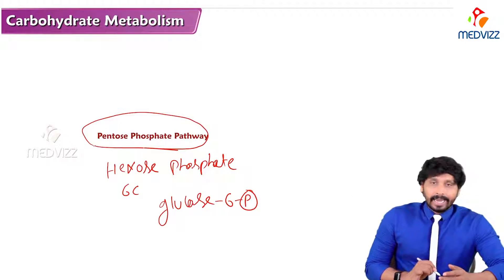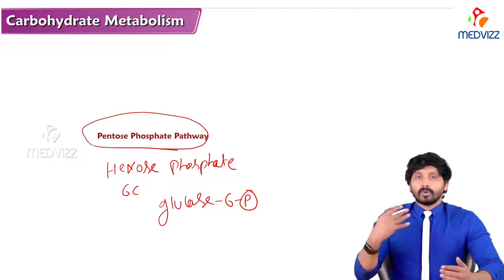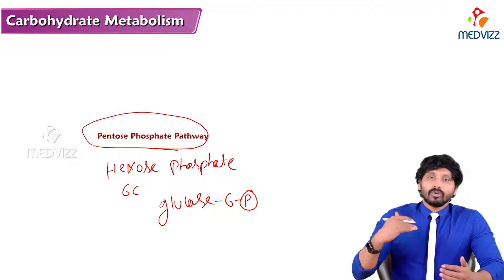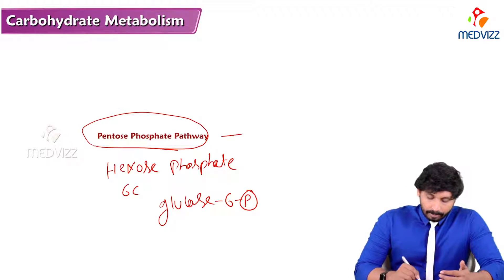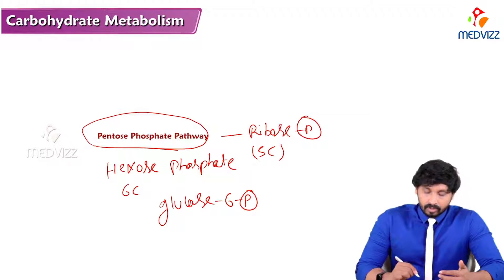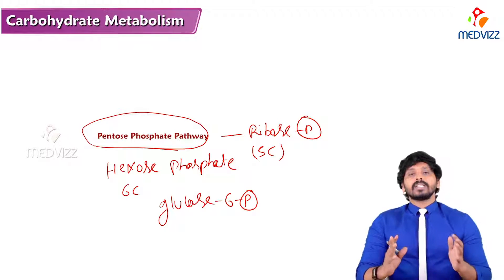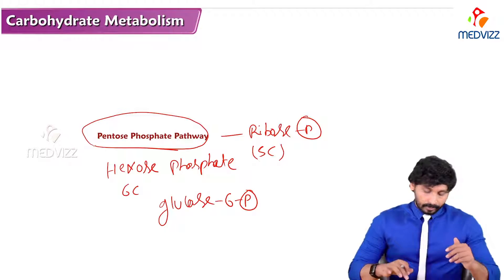It is also called the Pentose Phosphate Pathway because at the end of HMP there is production of pentose phosphates — specifically ribose, which is a 5-carbon sugar attached with phosphate. That's why it is known as Pentose Phosphate Pathway.